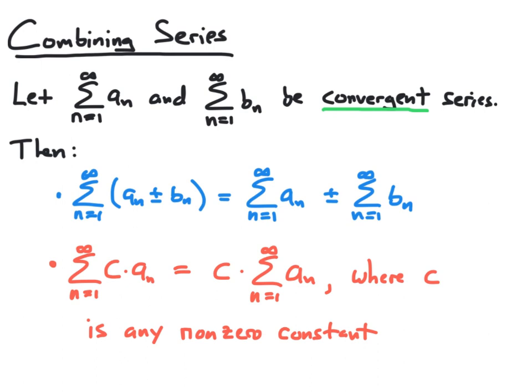So if we have these two convergent series, we can form a new series by taking the sum from n equal 1 to infinity of the term a sub n plus b sub n, or a sub n minus b sub n. In other words, we're going to take the series terms for our two series and add or subtract them together. If we do this, as long as the two initial series are convergent, then this new series will simply equal the series n equal 1 to infinity of a sub n, plus or minus the series from n equal 1 to infinity of b sub n.